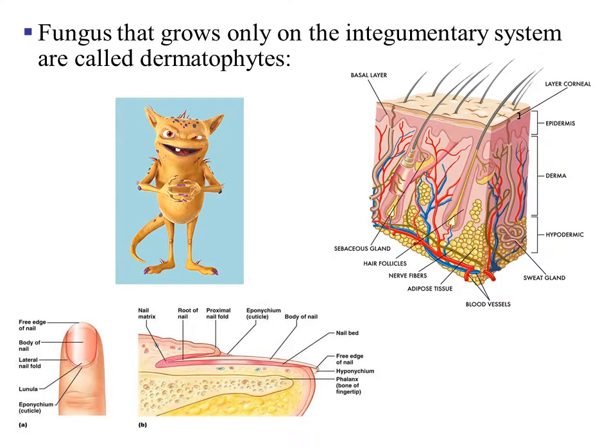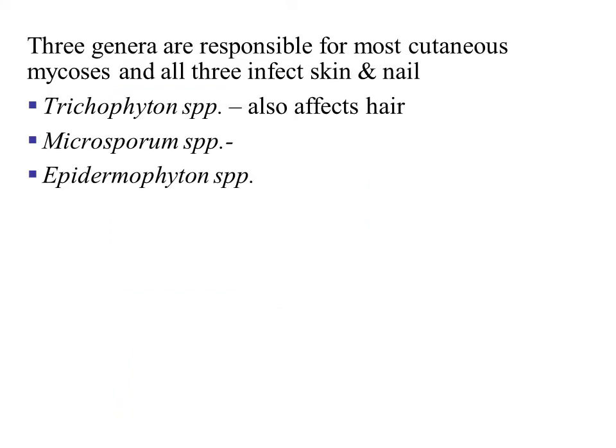Fungus that grows only on the integumentary system is called dermatophytes. Three genera are responsible for most cutaneous mycosis, and all three will infect the skin and nails. Trichophyton has different species. All of them will affect the skin and the nails, but Trichophyton will also affect the hair, whereas the other two genera — all of their species will infect the skin and the nail.